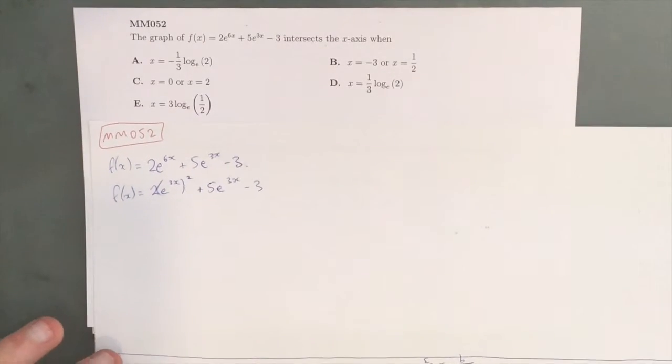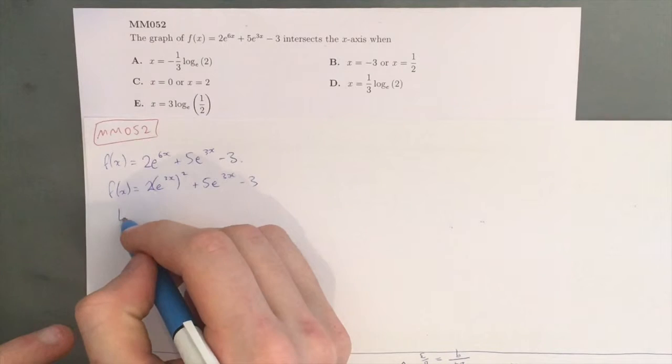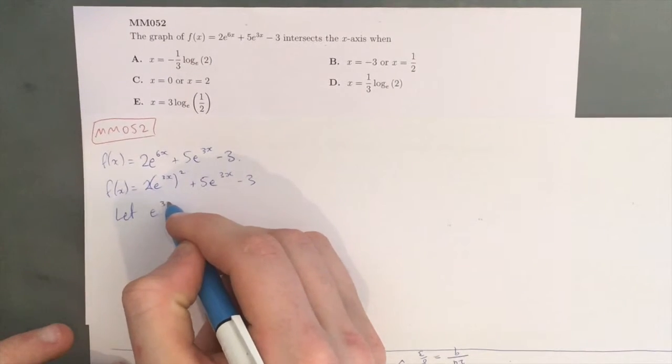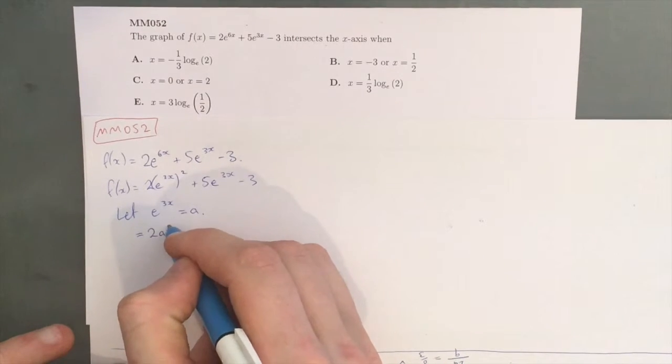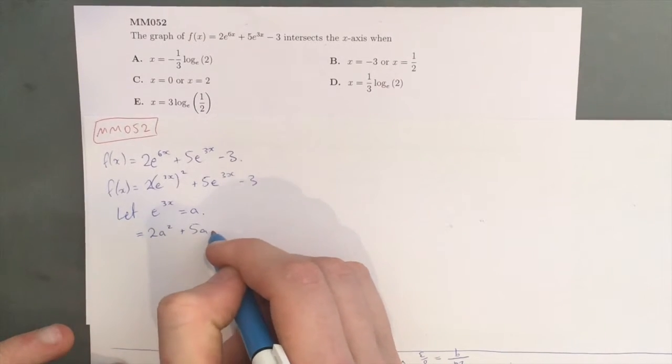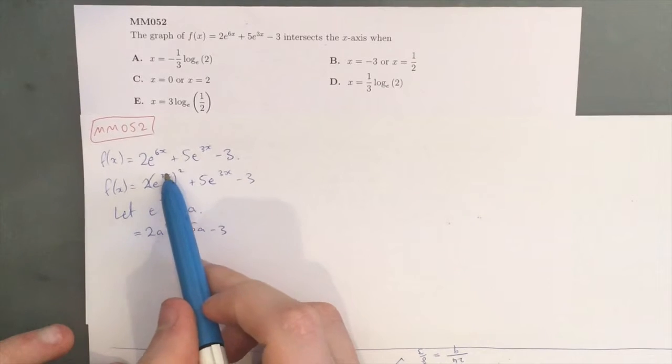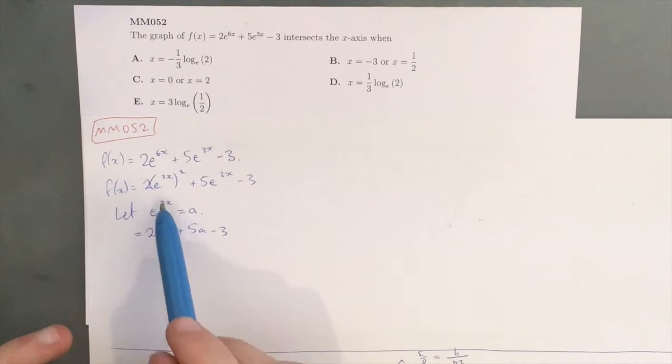Now, if you've done this sort of question before, you'll see where I'm going with this, but now we let e^(3x) equal a, and what that allows us to do is to create 2a^2 + 5a - 3. All we've done is replace e^(3x) with a.